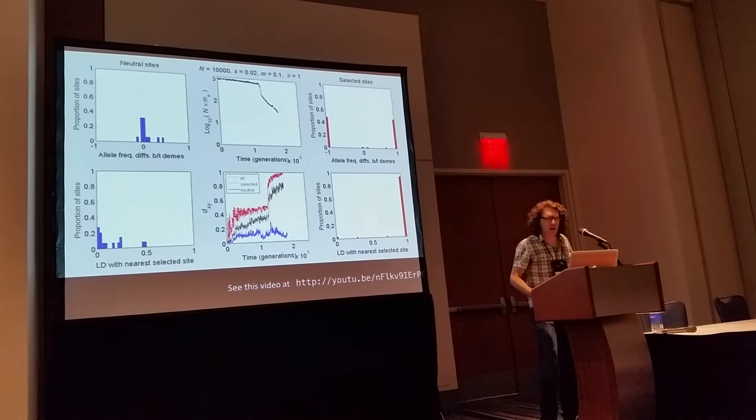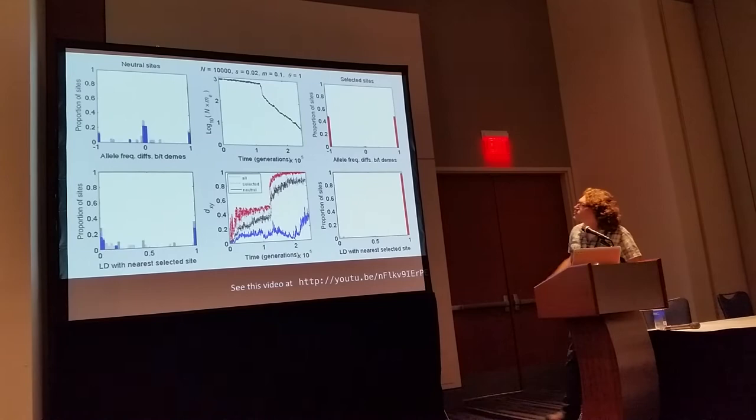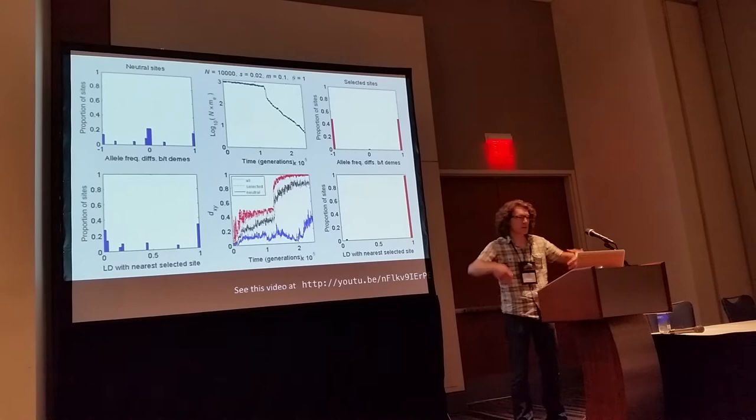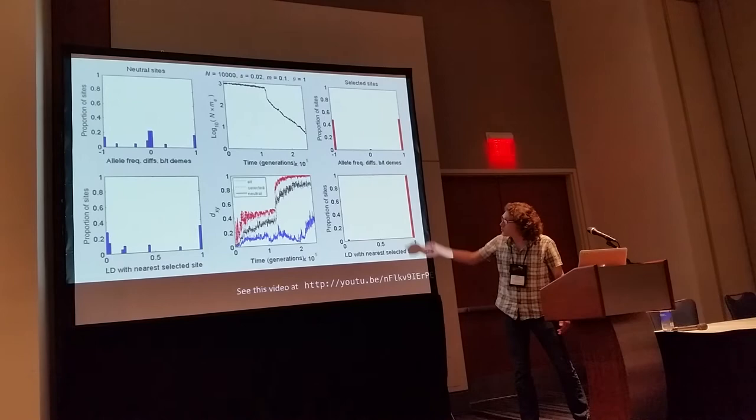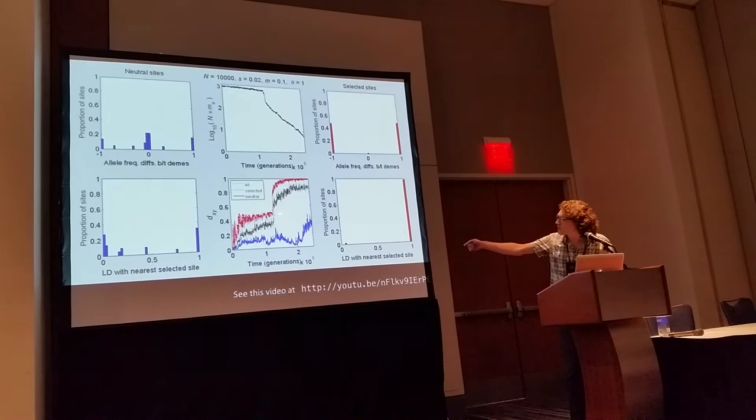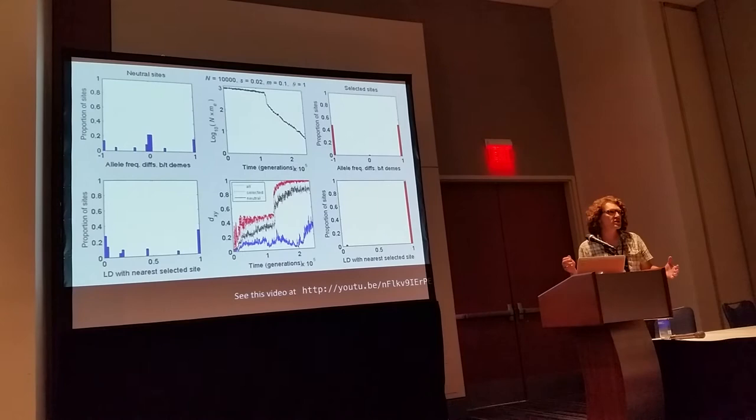That's reflected in DXY as well — look at the difference between the red and blue lines. As we continue forward and the effective migration rate drops more and more, we eventually start to see the neutral sites begin to take off in their divergence. The one thing I want to focus on for the remainder of my talk is this big gap between the selected and neutral sites — both before and after the genome-wide congealing transition, there is quite a large divergence gap.